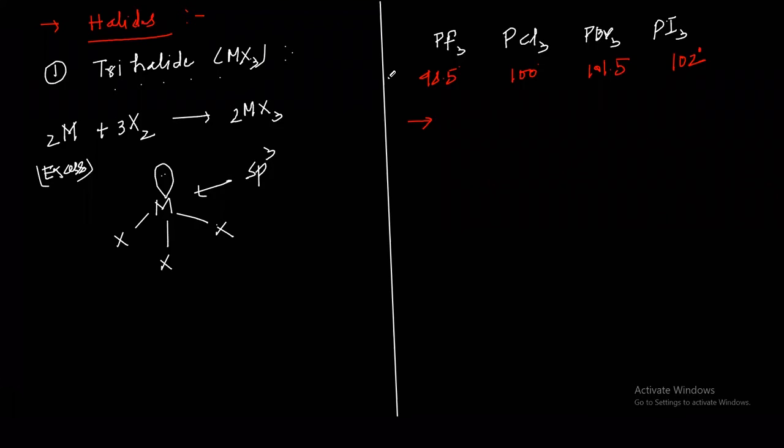Write down the Lewis basic strength of NX3. The Lewis basic strength: NF3 has minimum, then NCl3, then NBr3, and then NI3. This is the Lewis basic strength of trihalides of nitrogen. Lewis basic strength is tendency to lose lone pair. So when electronegativity increases, then tendencies to donate lone pair will be less. That's why Lewis basicity of NF3 is minimum. This is the order of Lewis basic strength of NX3.